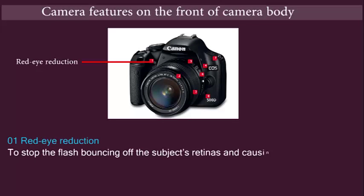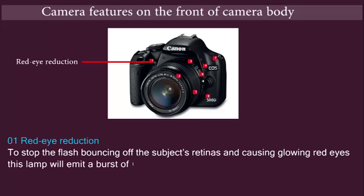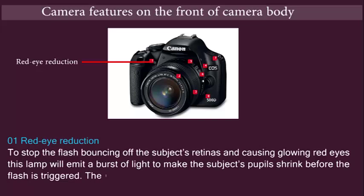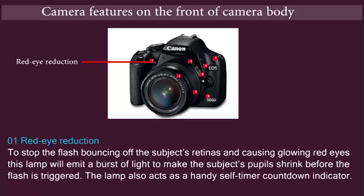Red eye reduction: To stop the flash bouncing off the subject's retinas and causing glowing red eyes, this lamp will emit a burst of light to make the subject's pupil shrink before the flash is triggered. The lamp also acts as a handy self-timer countdown indicator.